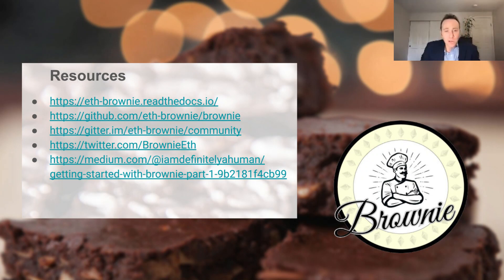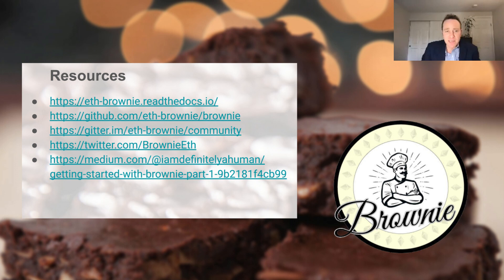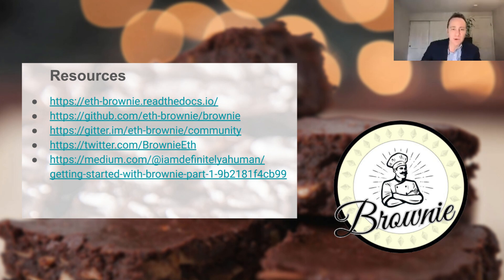If you'd like to learn more, we've pasted all these links in the show notes. As we mentioned, the documentation is fantastic — if you visit ethbrownie.readthedocs.io you'll be able to get started much quicker than this video. You can also browse the codebase at github.com/ethbrownie — it's also very clean. The community is very active and you can reach them on Gitter and on Twitter. One of Brownie's creators, the absolutely legendary Ben Hauser, has created a fantastic tutorial series on Medium. It's highly recommended and we're basing a lot of our tutorial through these videos off of his work, so we owe him a tremendous debt. We look forward to seeing you in the next video where we will get started with installing Brownie on your local machine.